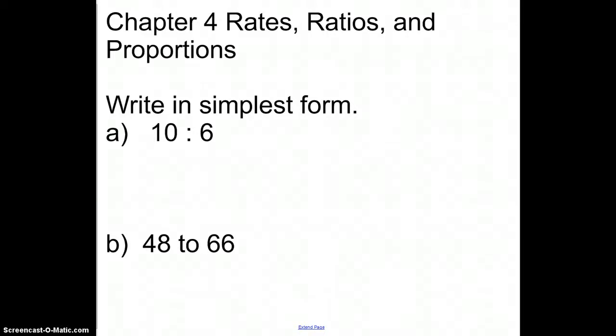As we begin our work in Chapter 4, we're going to focus in this section on dealing with rates, ratios, and proportions. When they want you to write something in simplest form, this is really focusing on the idea of ratio. If I'm focusing on a ratio, I take it and write it as a fraction in the order it's written — the first number goes on top, the second number goes on the bottom. The one thing you need to remember with a ratio is you have to reduce it just like you do with a fraction.